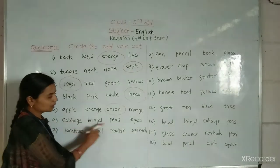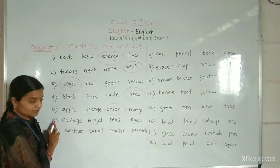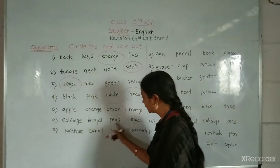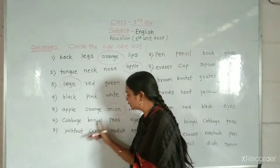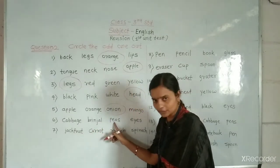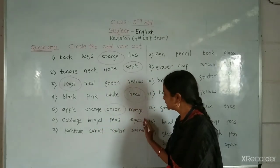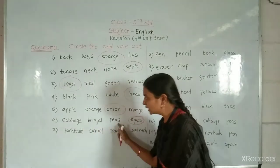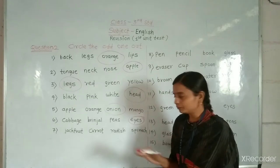Next. Cabbage, brinjal, peas, eyes. Number six. Cabbage, brinjal, peas, eyes. Cabbage, brinjal, peas. Name of visitables. And eyes is the name of our parts of body. Bagha. Cabbage, brinjal, peas.